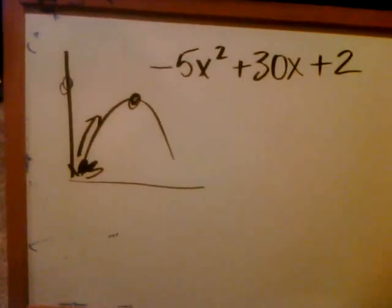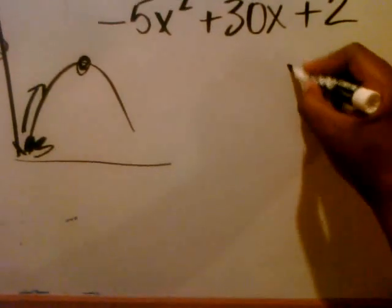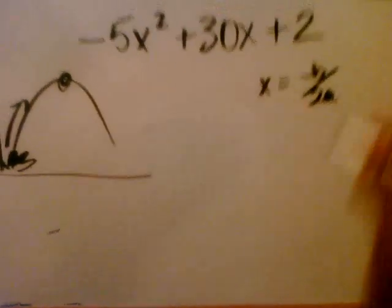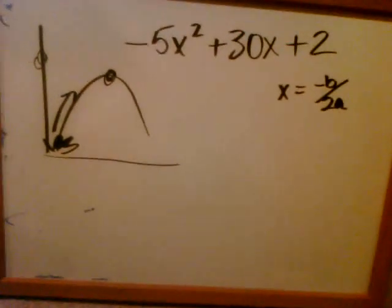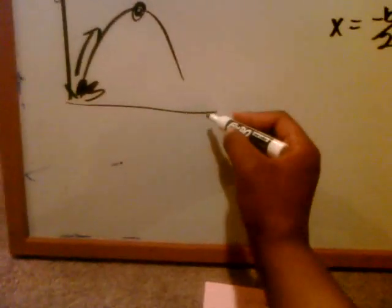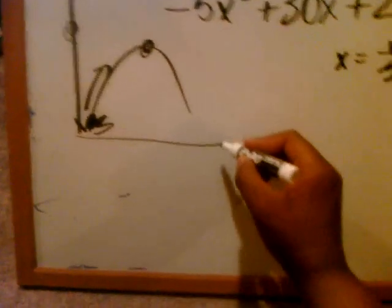And so we find that highest point by this simple equation: x equals negative b divided by 2 times a. And so now that we know this information, what we need to know is what will be this highest point, and then what does this axis mean?